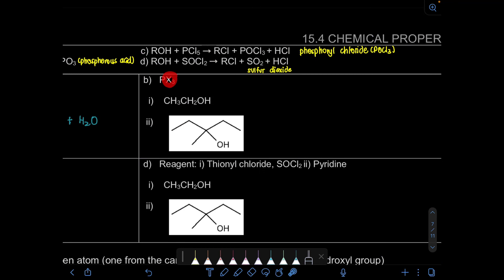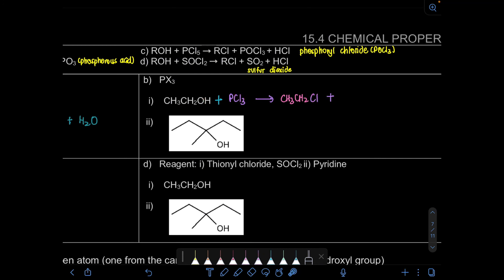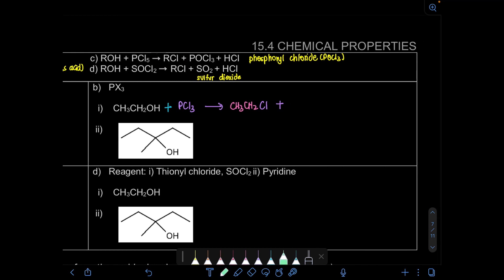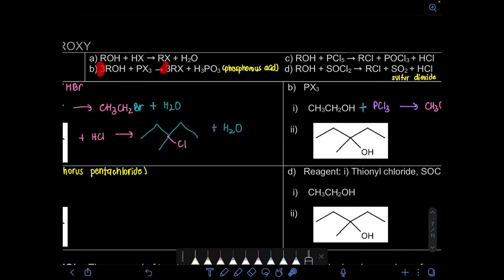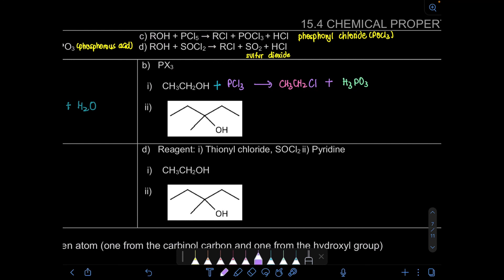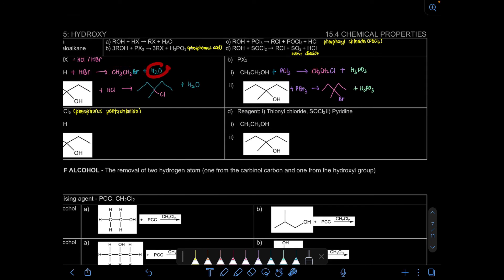Next is PX₃, where X can be Cl or Br, and P is phosphorus. Reacting with PCl₃, we substitute OH with Cl to give a chloroalkane, and the byproduct is phosphorous acid H₃PO₃. The equation is written with 3 molecules to keep it balanced. Reacting with PBr₃, we substitute OH with Br, and the byproduct is also phosphorous acid H₃PO₃.